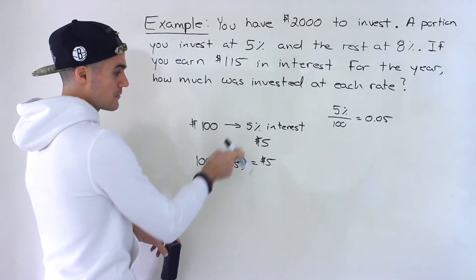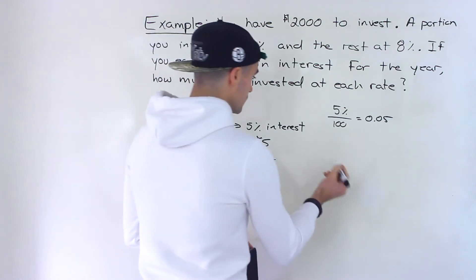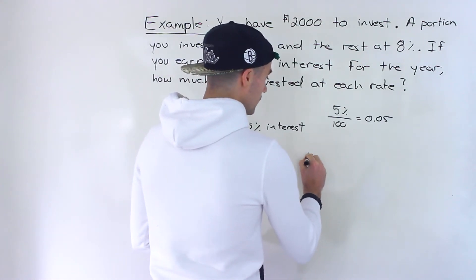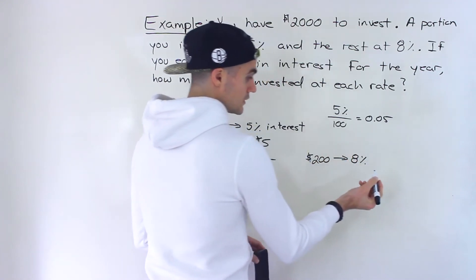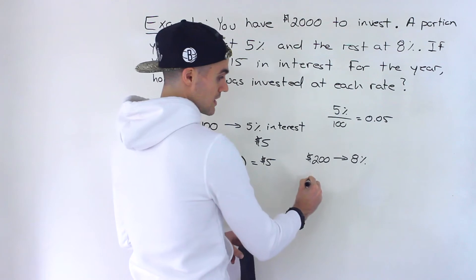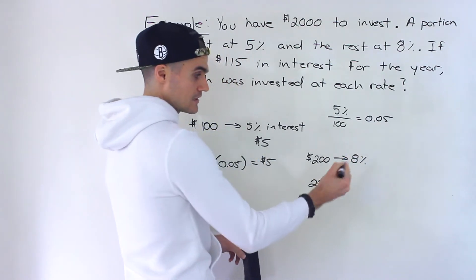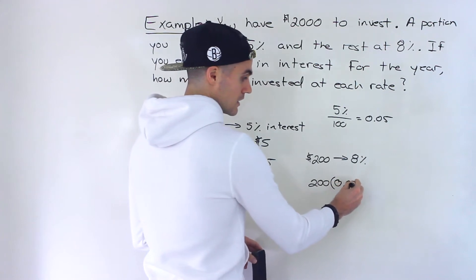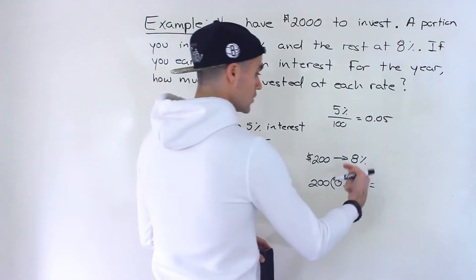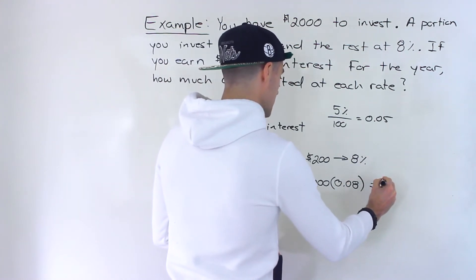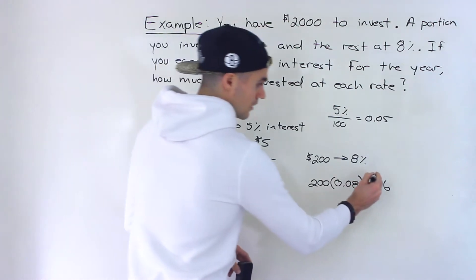Because if we took 100 multiplied by 5, we would end up with 500, which wouldn't make sense. So for example, if we take 200 and we're earning 8% interest on it, well, the interest that we're going to get is 200 times 8% in decimals is 0.08, which would, when you multiply these out, you'd end up getting $16.